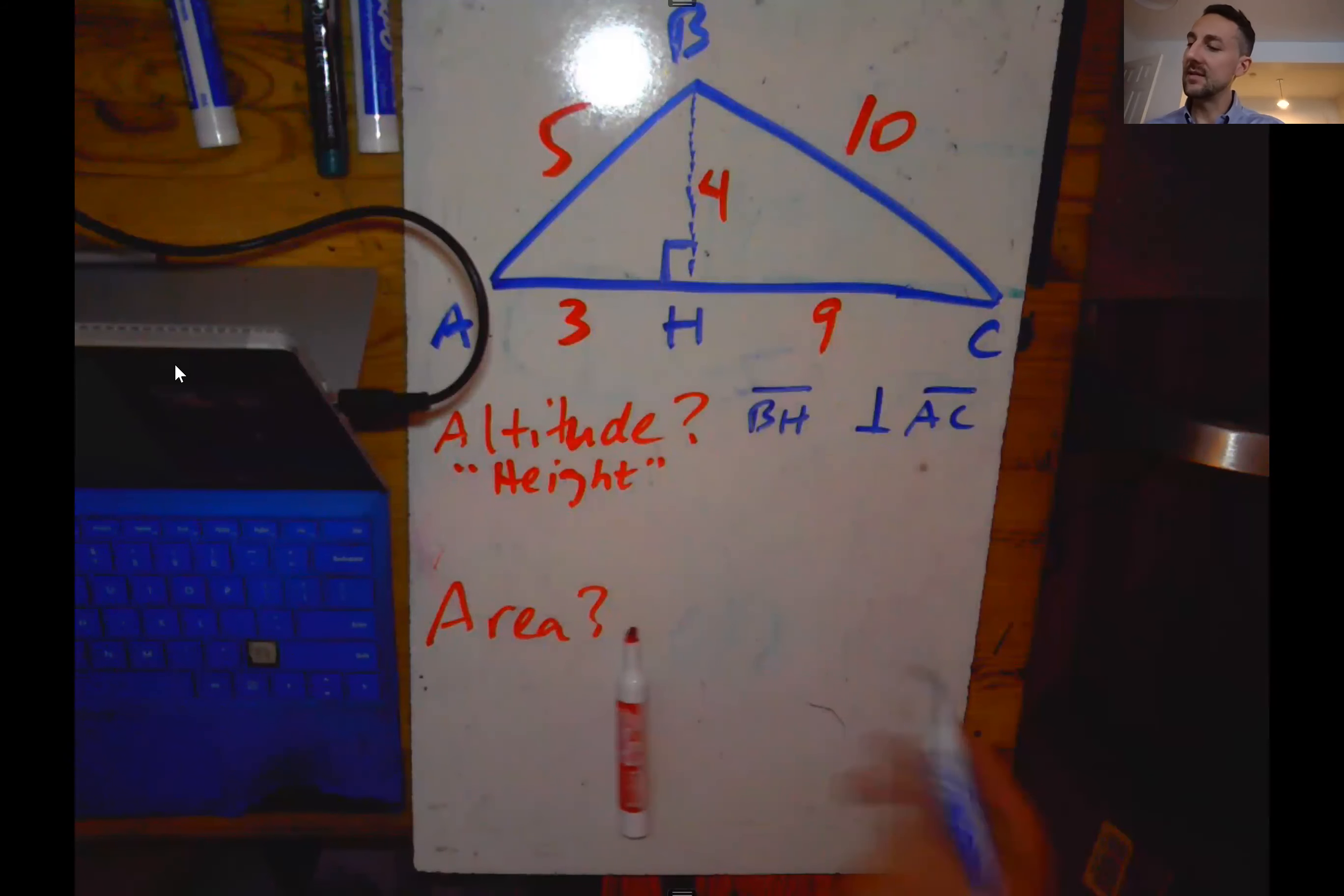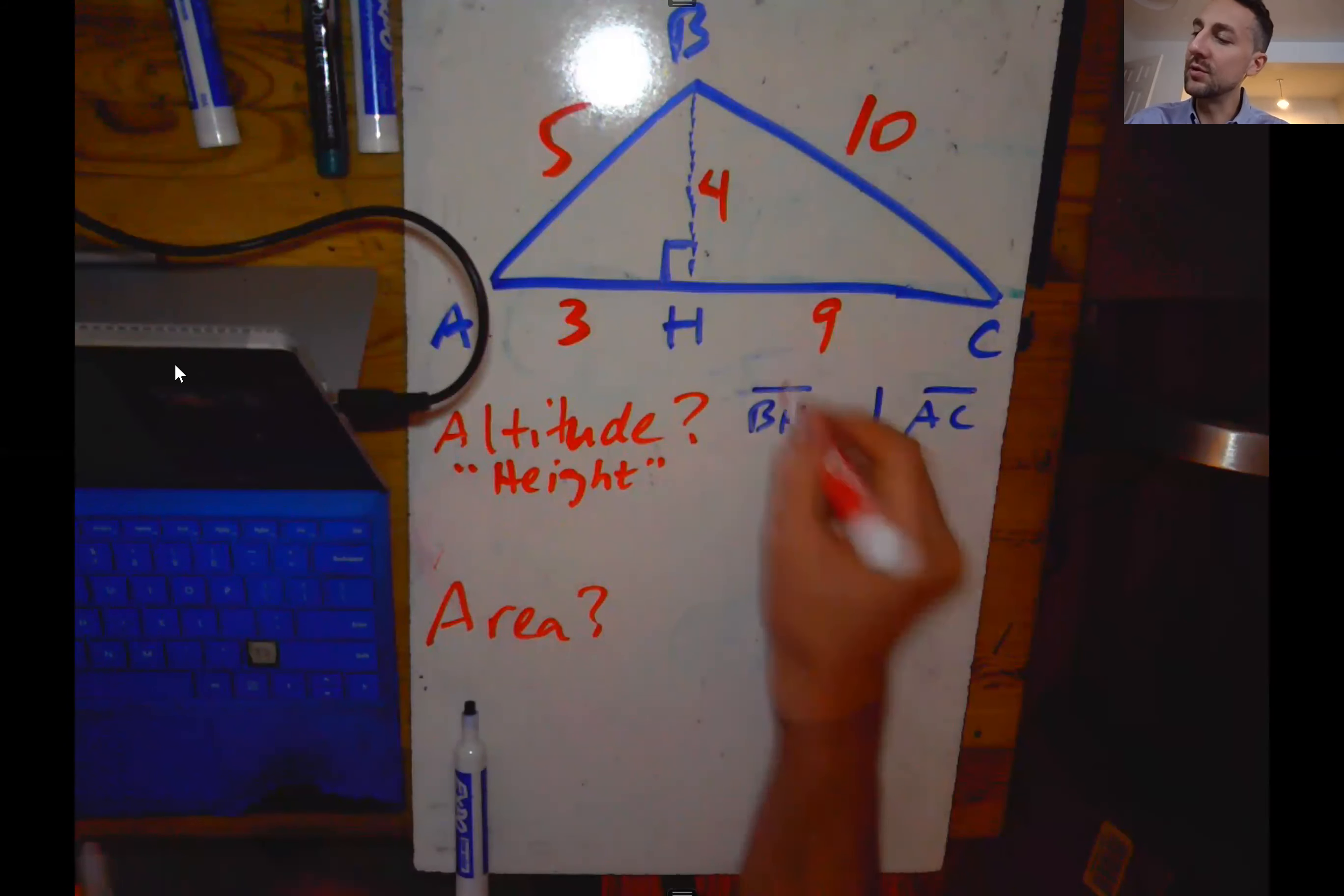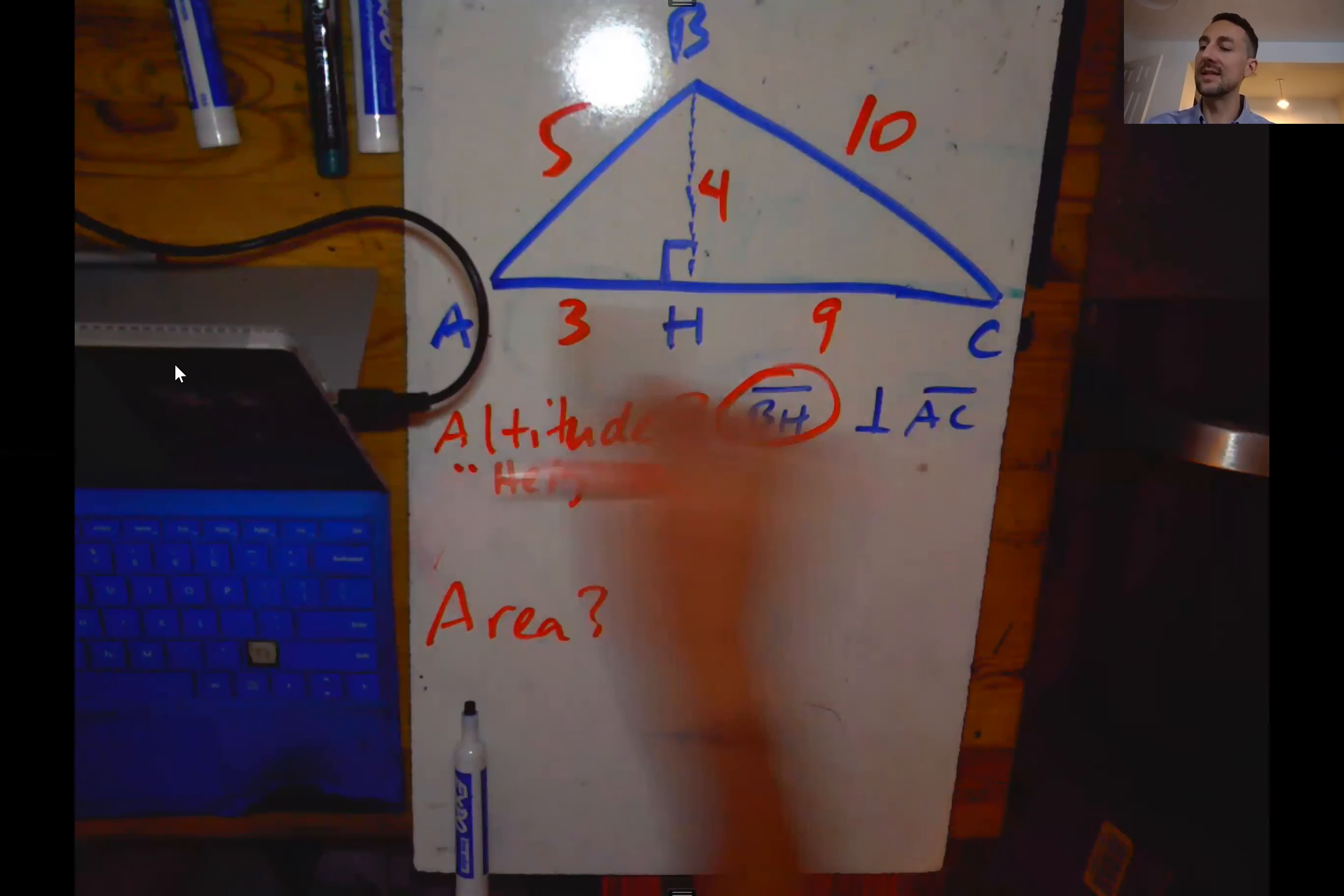So in this case BH is the altitude because it is perpendicular to line segment AC, which we can use as a base in this case.